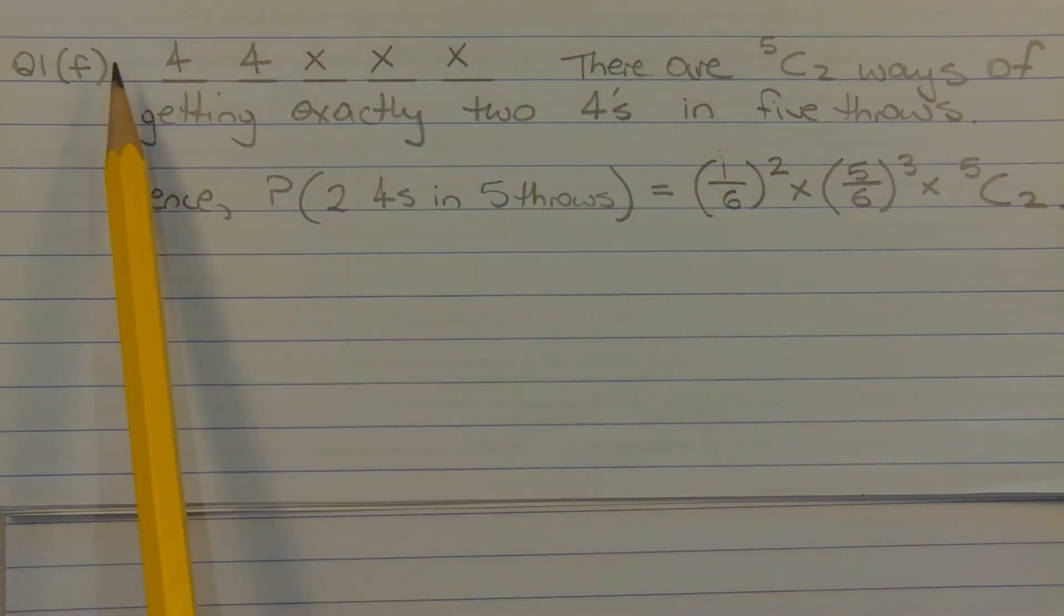And considering the number of combinations, there are five choose two ways of getting exactly two fours in five throws or five rolls of a die. Hence the probability of two fours in five throws is equal to one over six to the power of two times five over six to the power of three times five choose two.